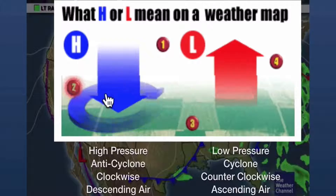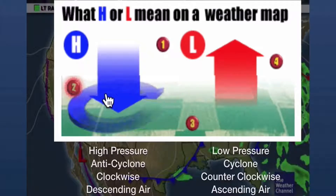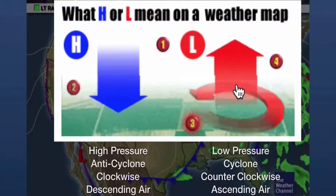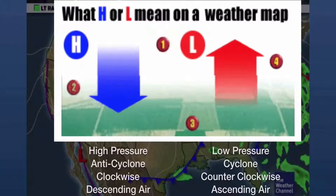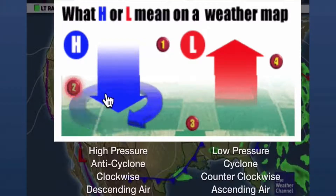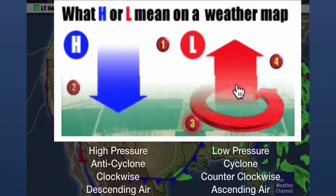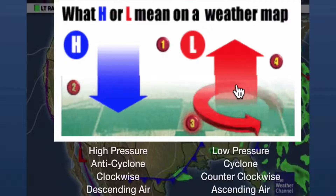As we already said, high pressure also means air that's descending. So all those things are going on at a high pressure zone. At a low pressure zone, we have cyclonic weather or a cyclone — wind that's blowing counterclockwise and air that's ascending. Clockwise means going in the direction of a clock; counterclockwise means going the opposite direction.